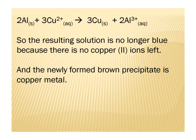You'll notice that the number of atoms are balanced: we have two aluminums on the left, two aluminums on the right, three coppers on the left, three coppers on the right. You'll also notice that the charge is balanced. We have three sets of 2+ ions on the reactant side, so the total charge is six positive. On the product side, we have two sets of 3+ ions, so the charge is also six positive. So our charges are balanced as well.